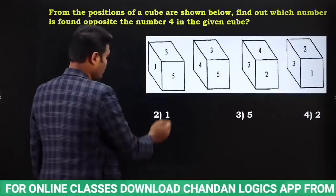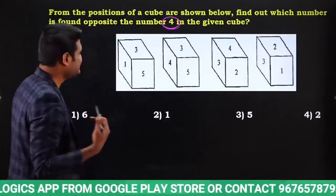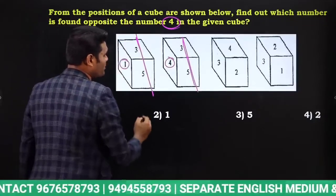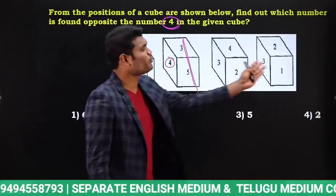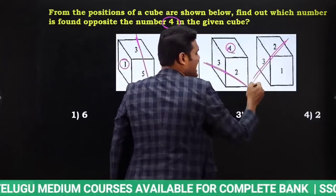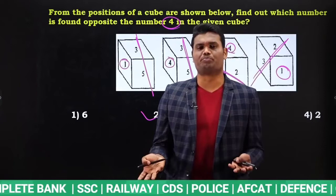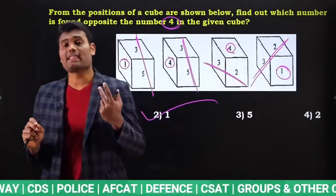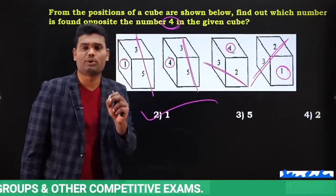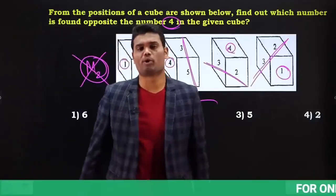Now here I have four views. Whether it is two, three, four, or ten views, it doesn't matter — you need to know the concept. Find what is opposite to 4. Check where 4 is. The combination with 4 is 3 and 5. Find 3-5 combination in another view — here it is. Left out is 1. So 4 opposite is 1. You can verify by checking another view where 4 appears: combination is 3 and 2. Find 3-2 combination — left out is 1 again. Same answer. Whatever two views you compare, you get the same answer. First preference always to Model 2; if not applicable, go to Model 1.